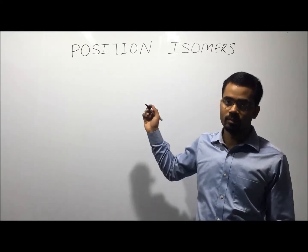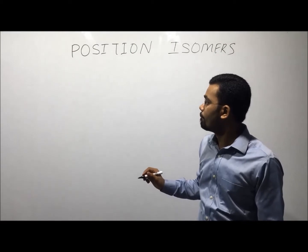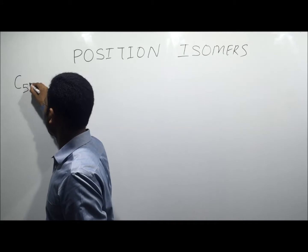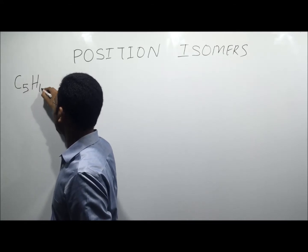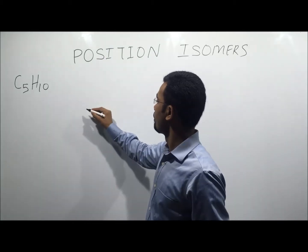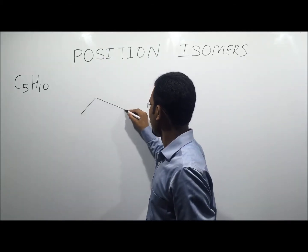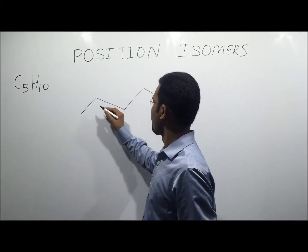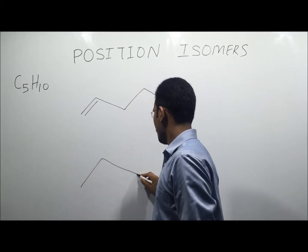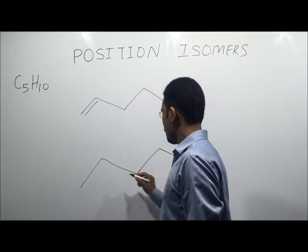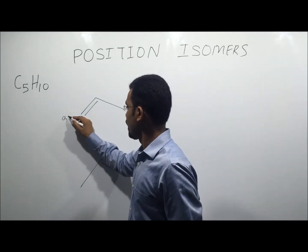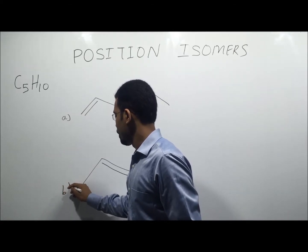So let us see an example. The molecular formula is C5H10. Let's draw the structural isomers. This is A and this is B.